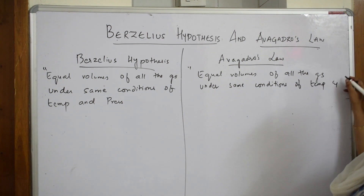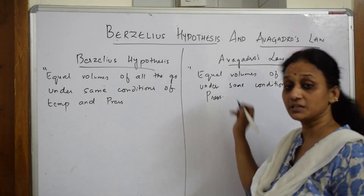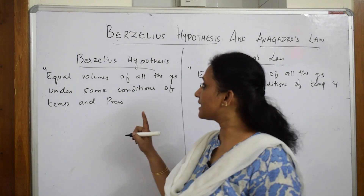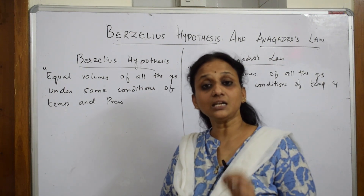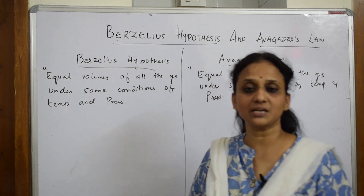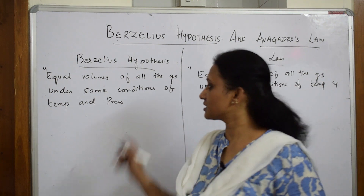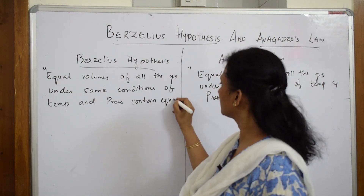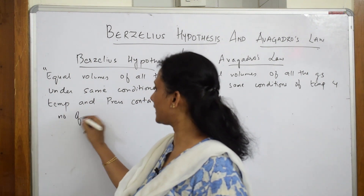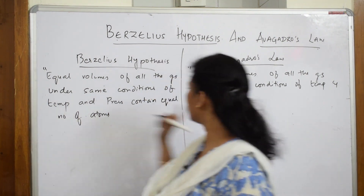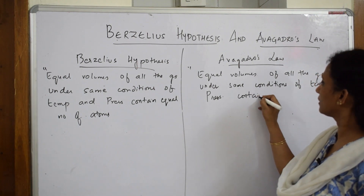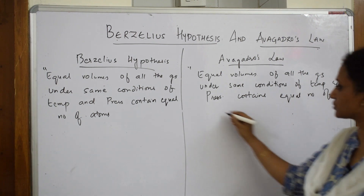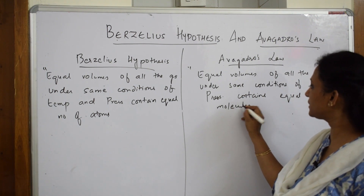Now, what is the difference? According to Berzelius, equal volumes of all gases under the same conditions of temperature and pressure contain equal number of atoms. According to Avogadro, it contains equal number of molecules — that is the key difference.